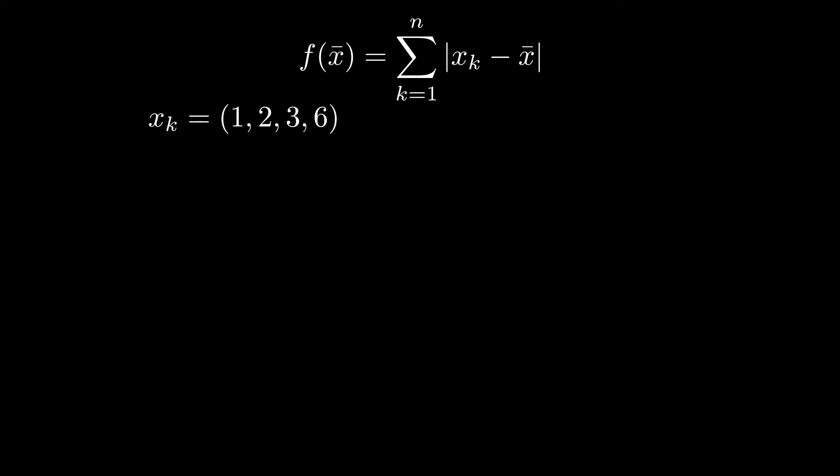Let's take a look at this function. We will use the numbers 1, 2, 3, and 6. From the graph, we can see there is not just one minimum, but a whole interval. In this case, the interval is from 2 to 3. Let's take a small step back and think about why this is true.